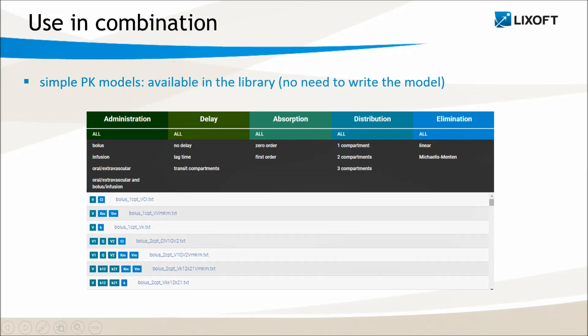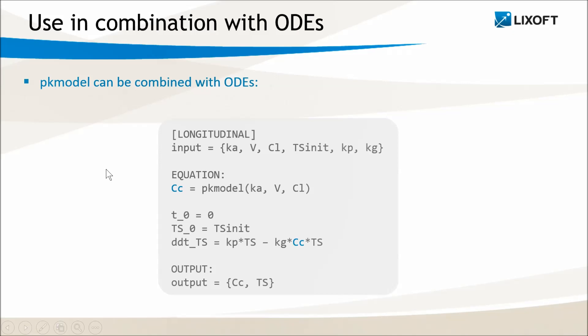Now let's see when the PK model macro can be useful. If you just want to use a simple PK model, you can pick it from the library and there is no point writing a model yourself. In the library, all combinations are available and it is very easy to use.